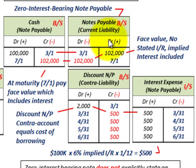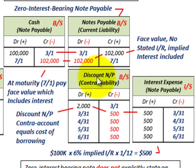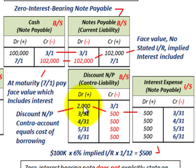For the notes payable on the balance sheet — our current liability — we credit that for $102,000, the face value with no stated rate of interest. The implied interest is included in that $102,000. The cash received is only $100,000, so we debit cash for $100,000. We set up a discount on notes payable — a contra liability account — and debit that for $2,000, representing the cost of borrowing. This balances: notes payable $102,000 minus discount $2,000 equals the $100,000 cash received.